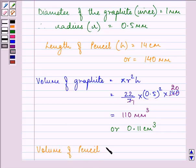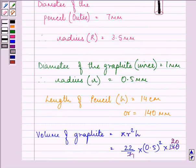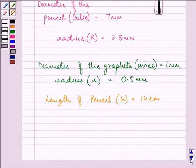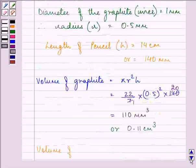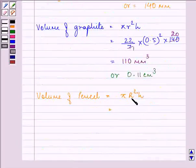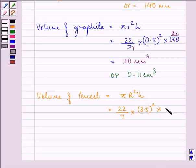Volume of pencil, the whole volume, will be πR²h. Here we need to use capital R. So it will be 22/7 × 3.5² × 140.